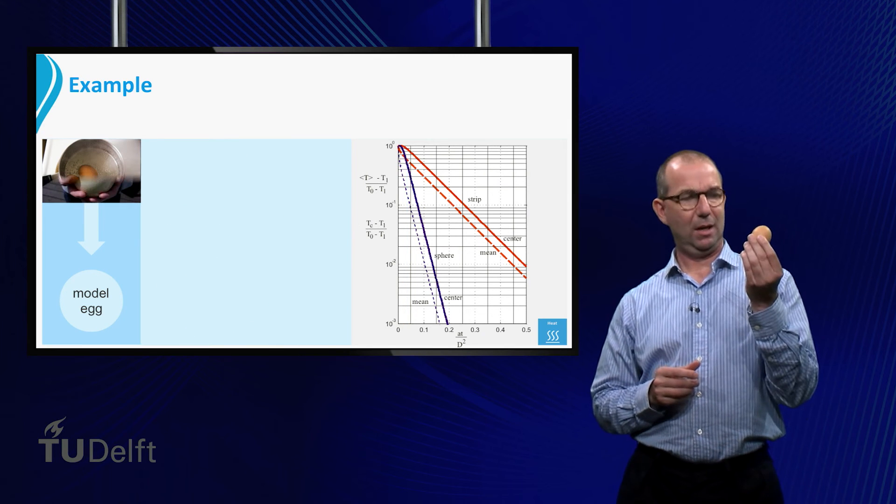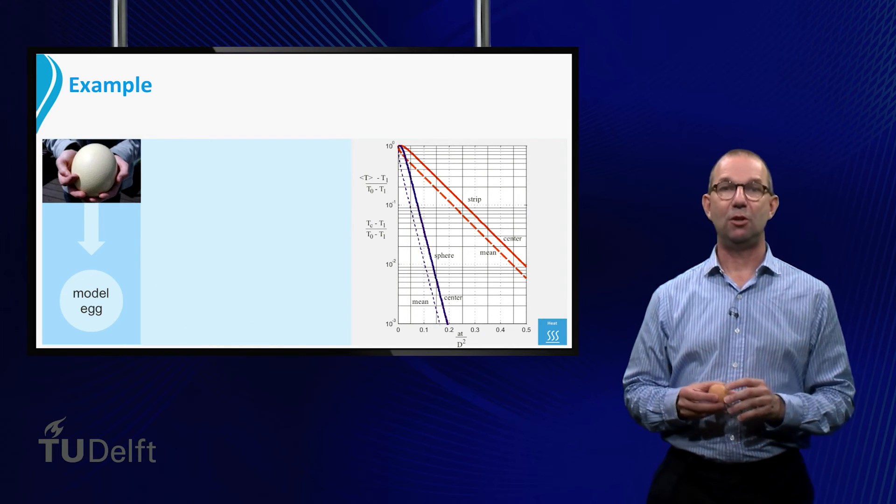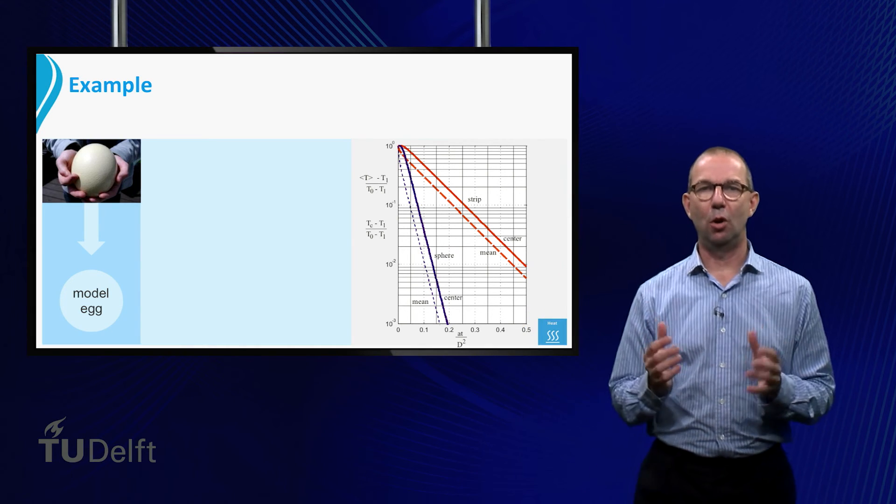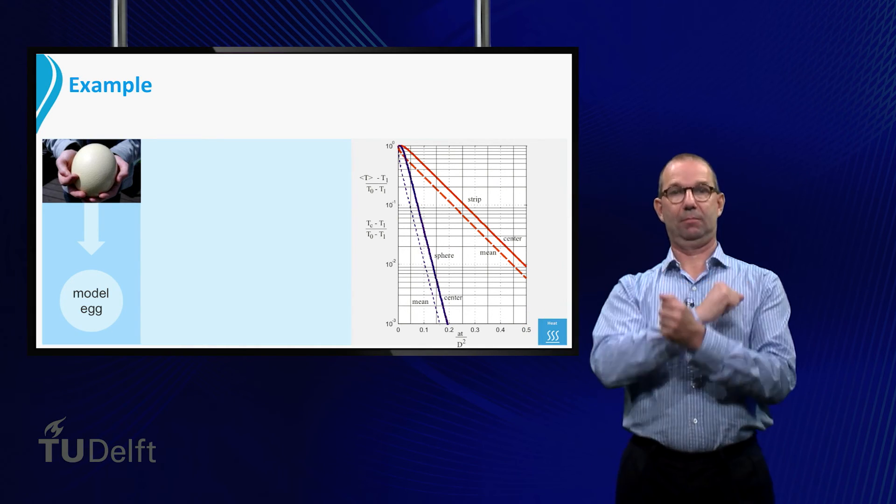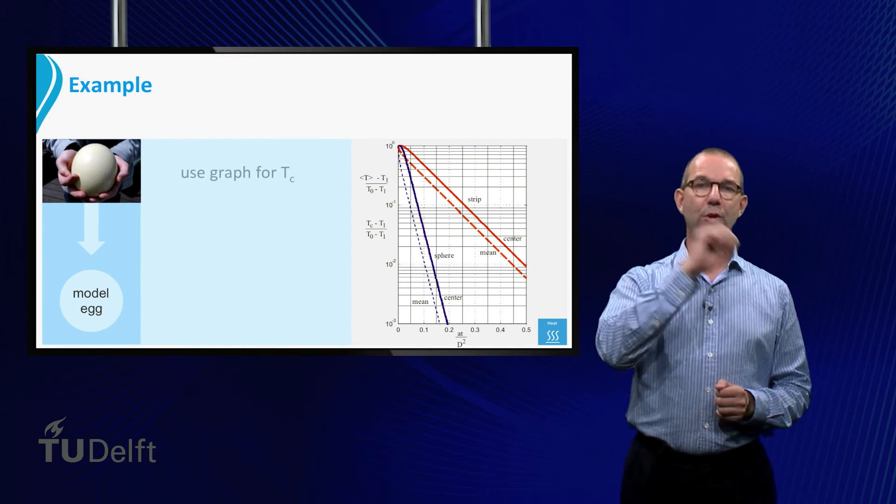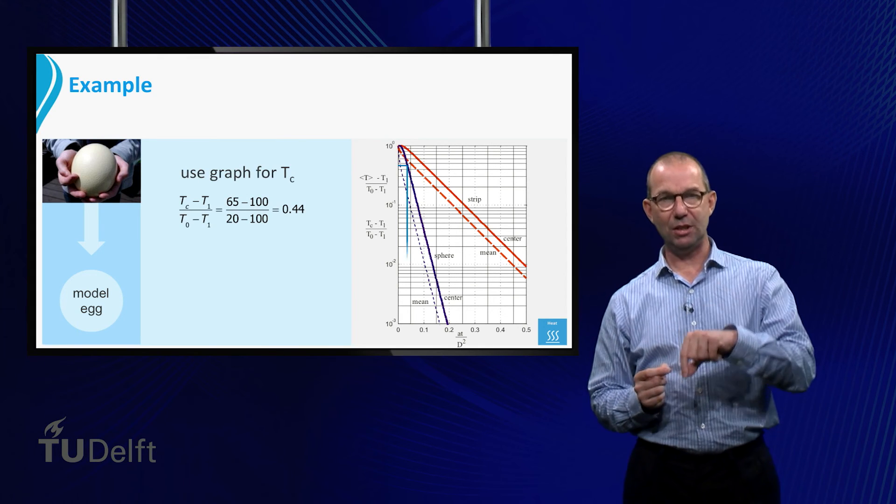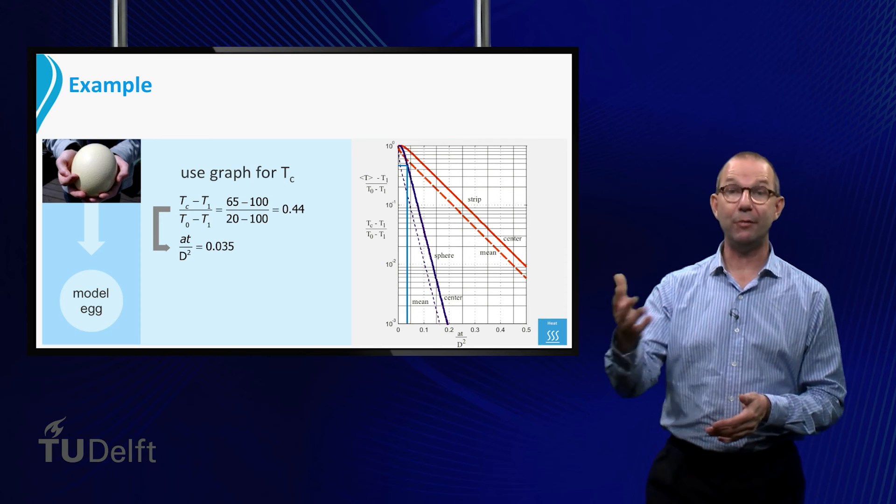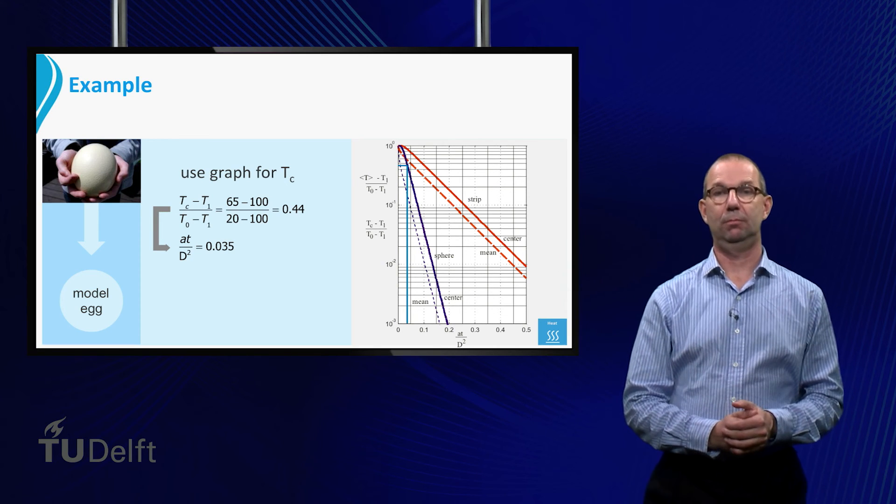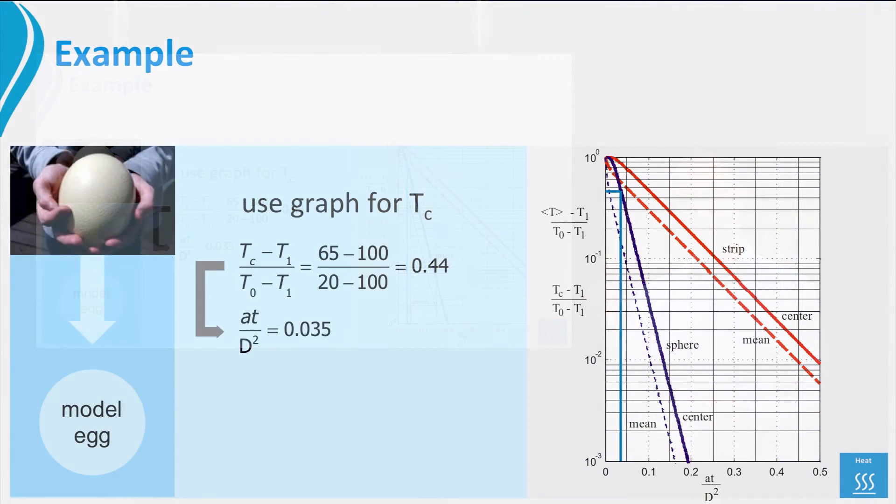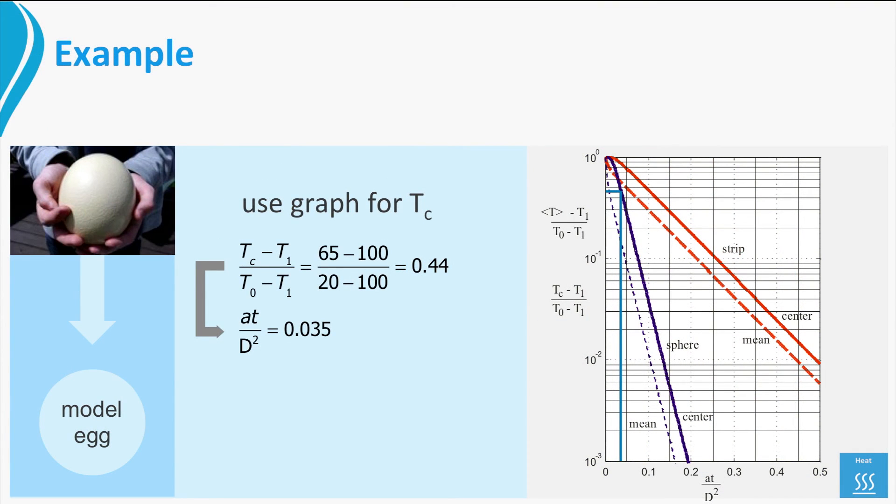Suppose you were really hungry. Remember, you didn't want to boil a chicken egg, instead you took an egg of an ostrich. How long do you have to boil this egg? Well, the analysis is basically the same. You use the graph, compute the dimensionless center temperature, which is of course again 0.44 as we haven't changed any of the temperatures. From the line of the sphere, you find dimensionless time, which is of course also the same, 0.035.